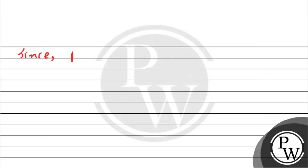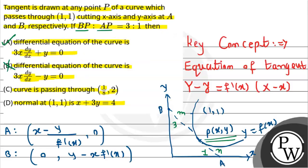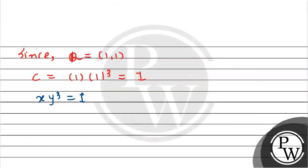Canceling ln from both sides: xy³ equals c. This is the equation of our curve. Since it passes through point (1,1), substituting: c equals 1 × 1³, so c equals 1.